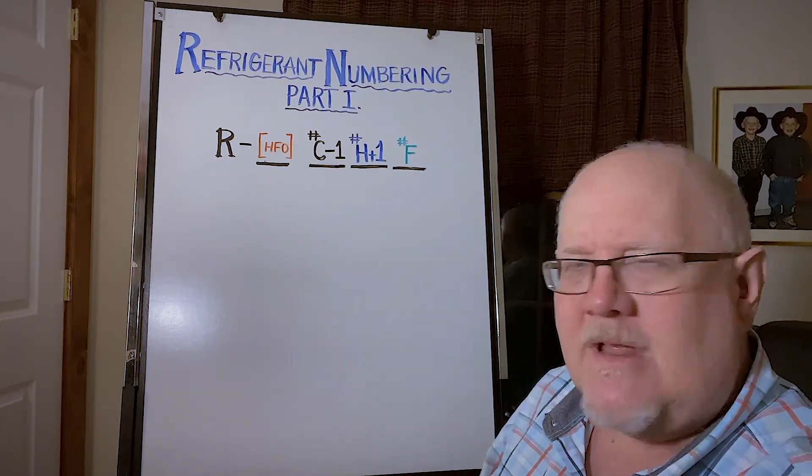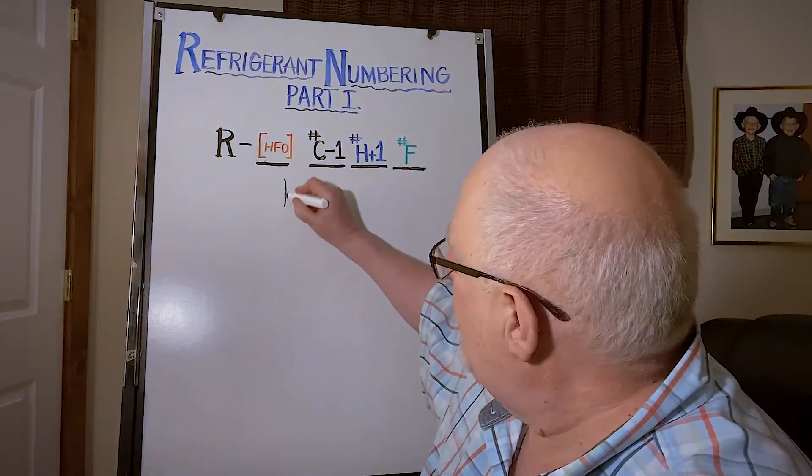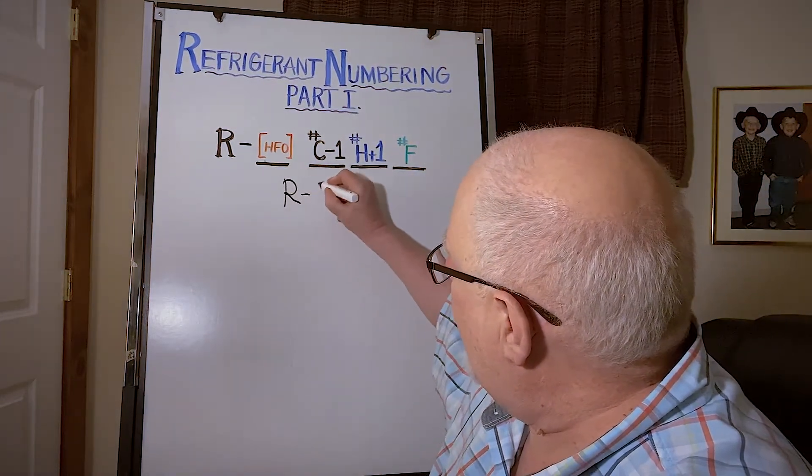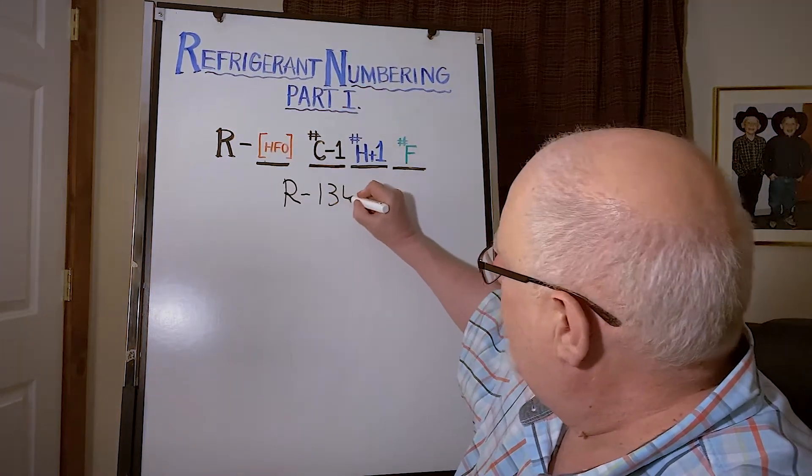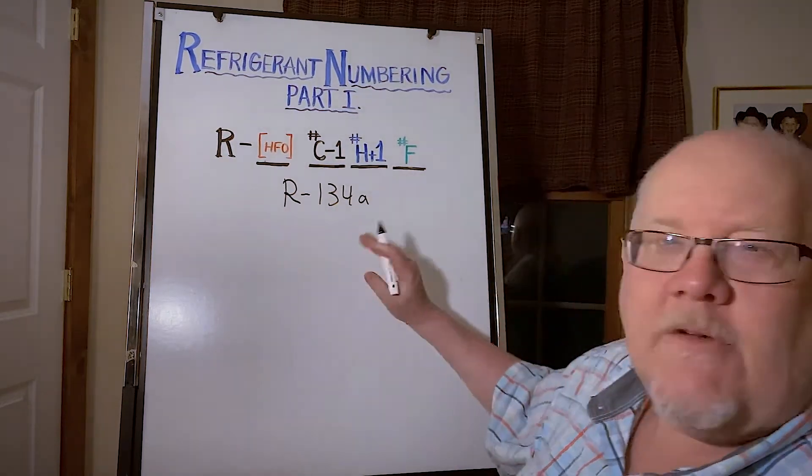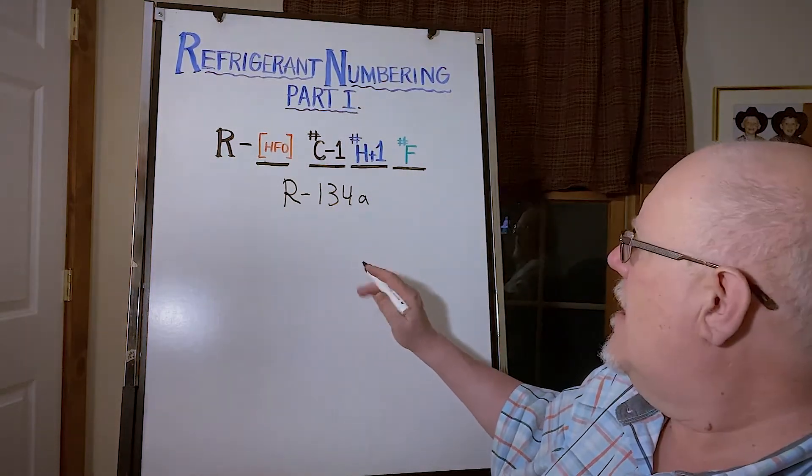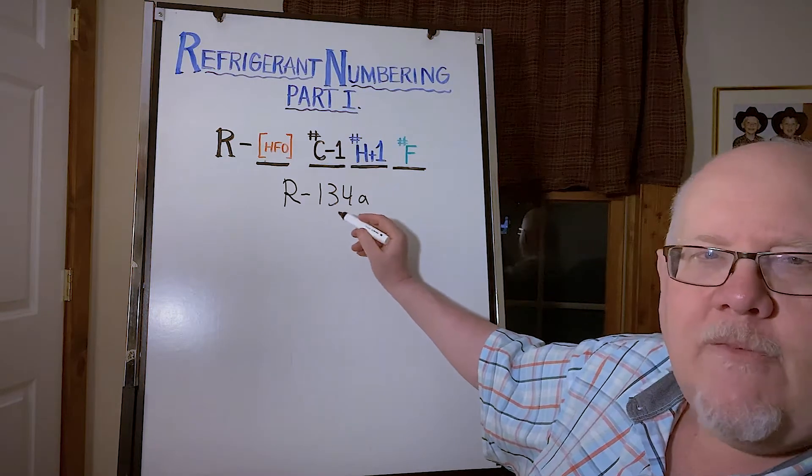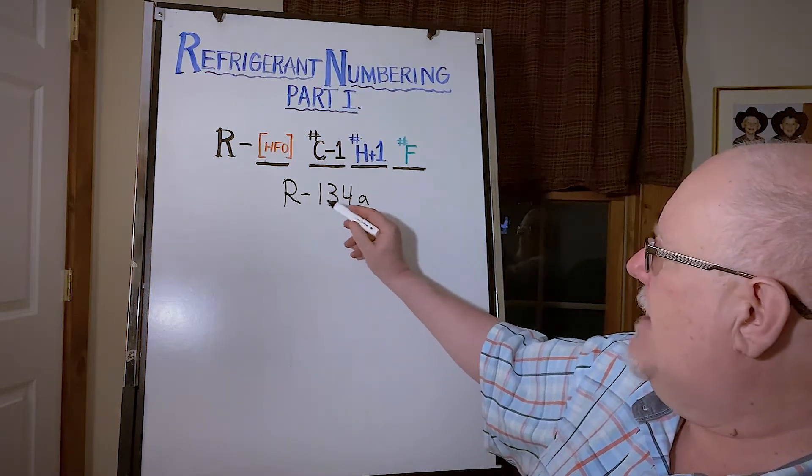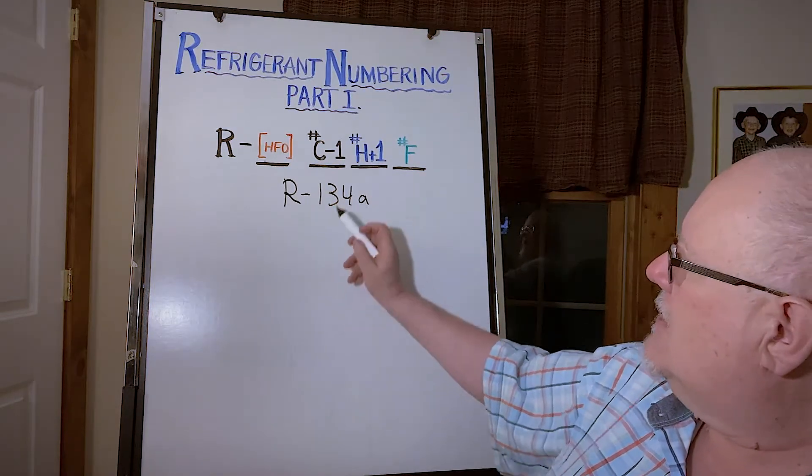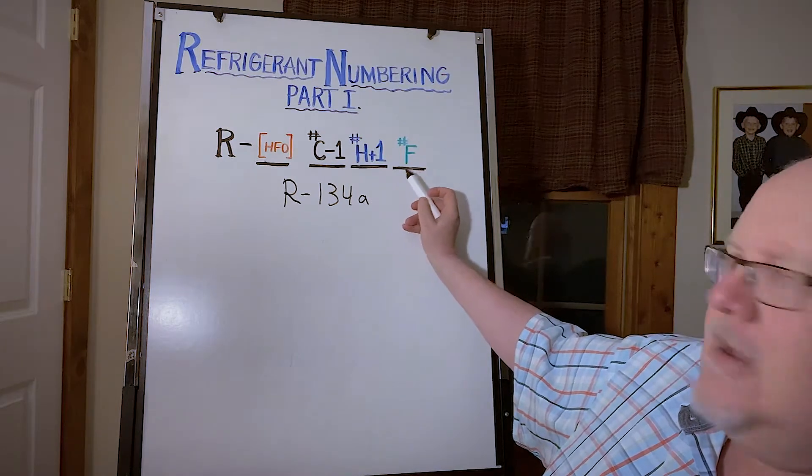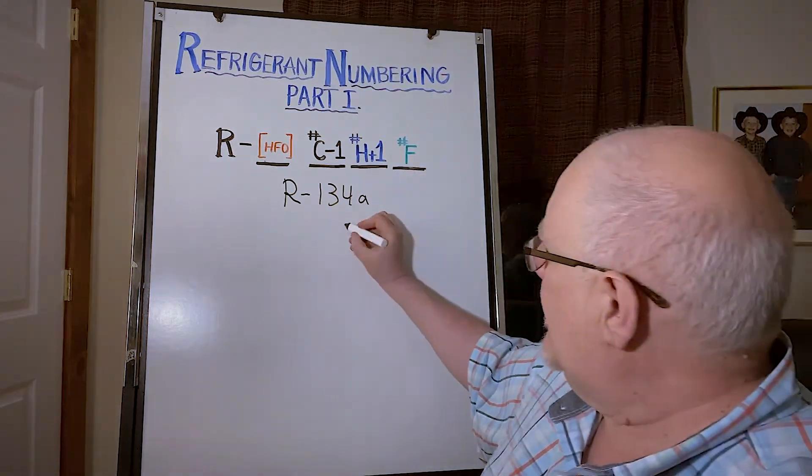Let me go through an example here, a very common refrigerant we use a lot: R-134a. So forget about the a for a second, but we can get the chemical formula for 134a based on this formula here.